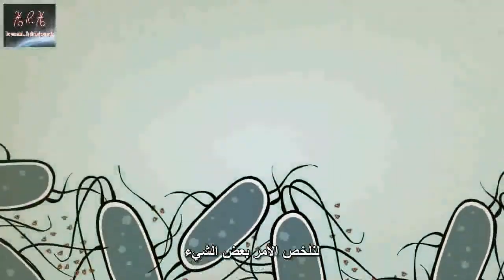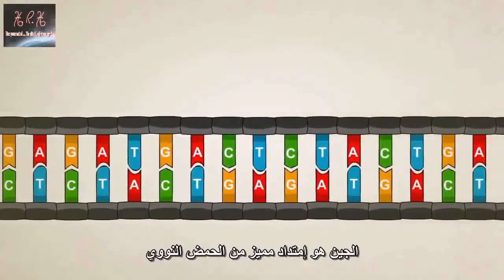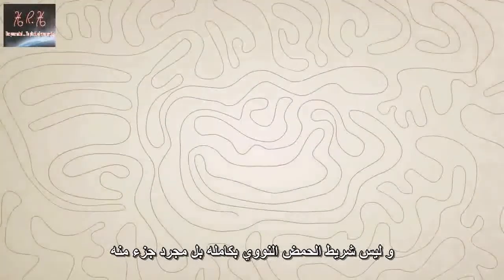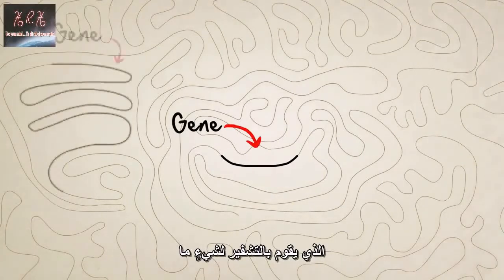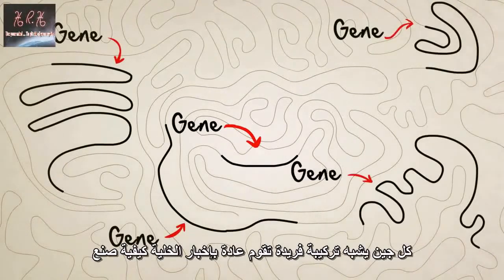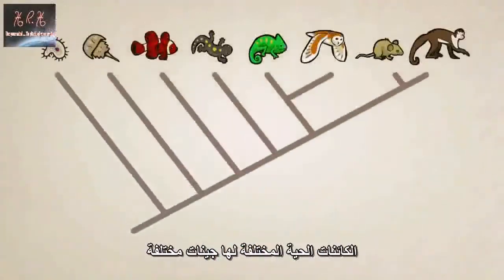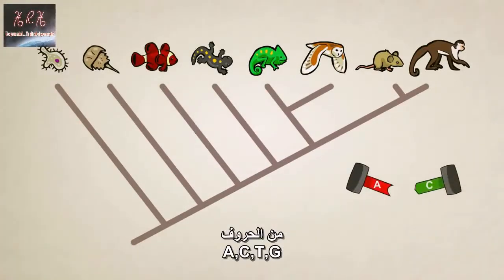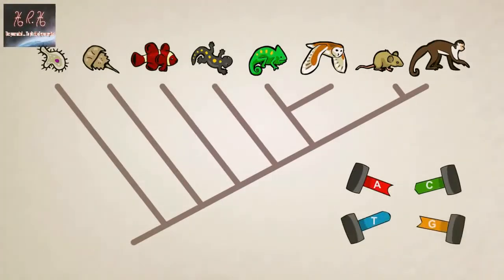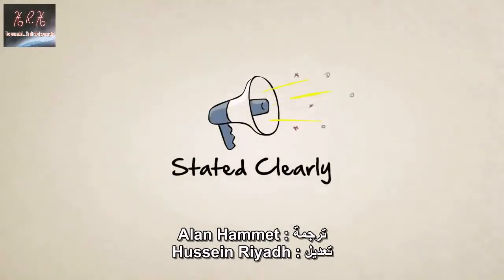So just to sum things up: what exactly is a gene? A gene is a special stretch of DNA — not the entire strand of DNA, just a segment that codes for something. Each gene is like a unique recipe, which usually tells a cell how to make a protein or a group of proteins. Different creatures have different genes, but all genes are written in the same basic DNA language of A's, C's, T's, and G's. I'm John Perry, and that's genes stated clearly.